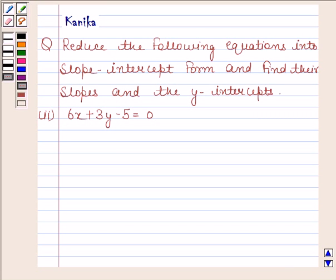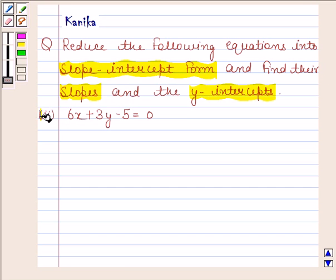Hi and welcome to the session. Let us discuss the following question. The question says reduce the following equations into slope-intercept form and find their slopes and y-intercepts. The equation is 6x plus 3y minus 5 equals 0.